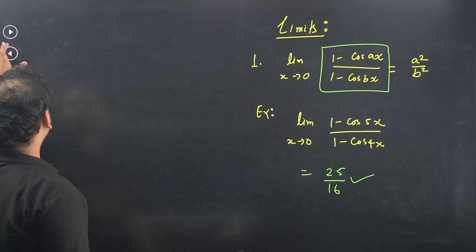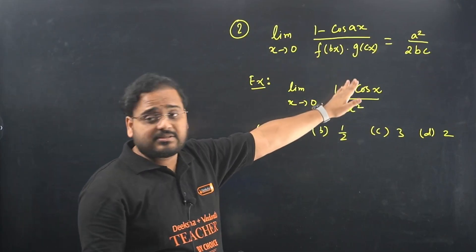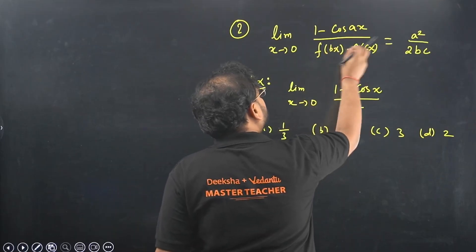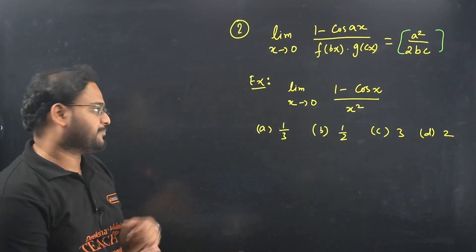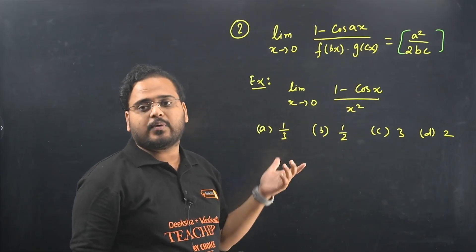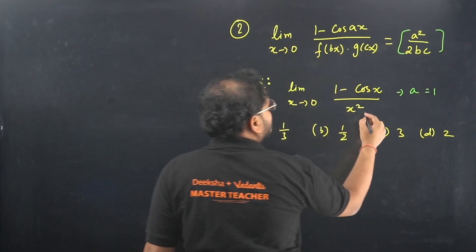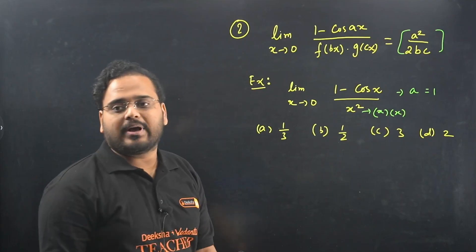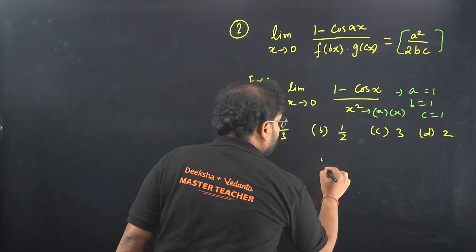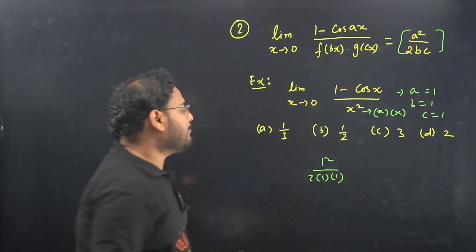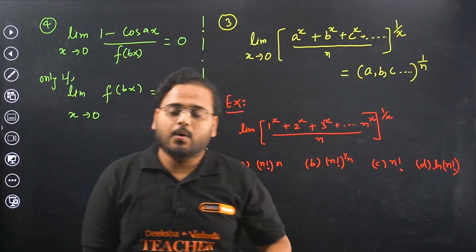Trick 2: For the limit of (1 - cos(ax)) / (f(bx) · g(cx)), where the coefficients are b and c, the formula is simply a²/(bc). For example, limit as x→0 of (1 - cos x) / x². Here a = 1, and writing x² as x·x gives b = 1 and c = 1. The answer is 1²/(1·1) = 1/2. That is option B.